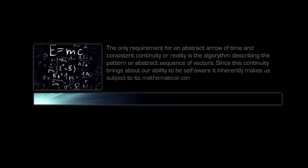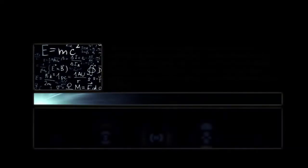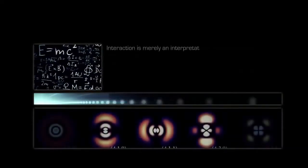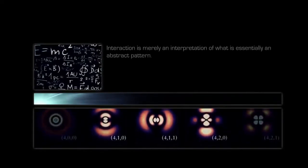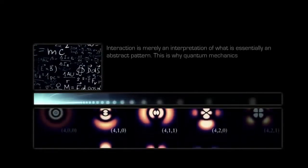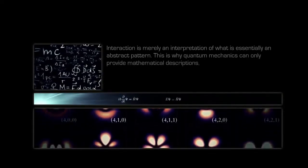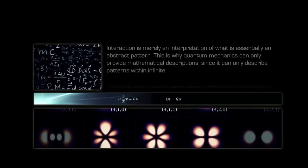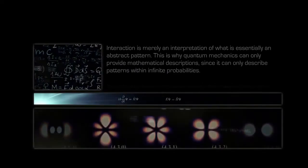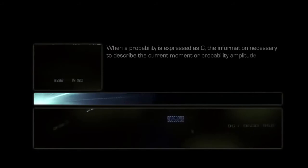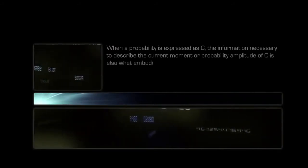Since this continuity brings about our ability to be self-aware, it inherently makes us subject to its mathematical consequences, the fundamental laws of physics. Interaction is merely an interpretation of what is essentially an abstract pattern. This is why quantum mechanics can only provide mathematical descriptions since it can only describe patterns within infinite probabilities. When a probability is expressed as C, the information necessary to describe the current moment or probability amplitude of C is also what embodies the arrow of time.